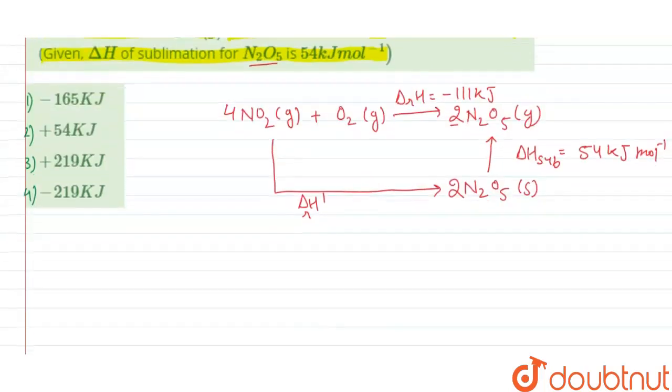Now according to Hess law, if any process happen in the steps, so the heat change of the particular process is the sum of heat change of all the steps involved.